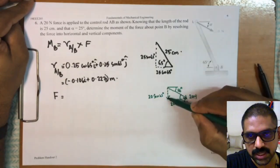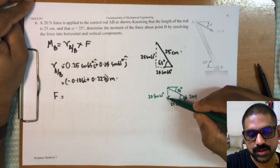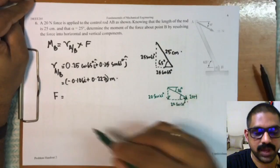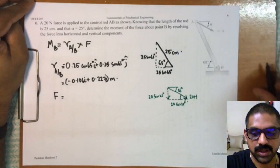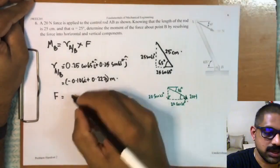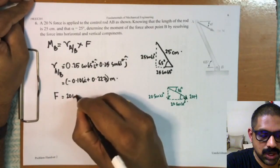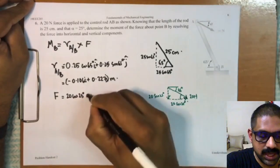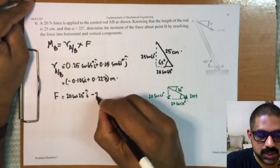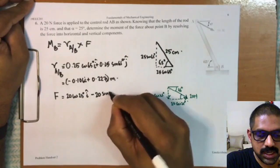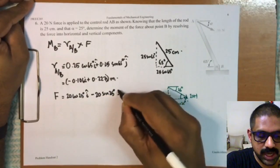So I have to be careful when I write my force vector. So my force vector turns out to be 20 cos 25 i cap minus 20 sin 25 j cap, which translates to be 18.126 i cap minus 8.452 j cap.